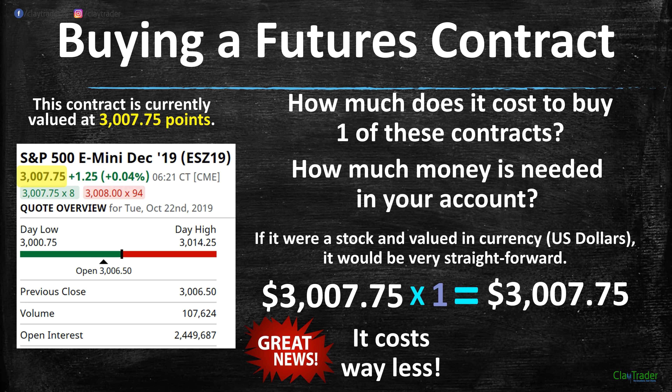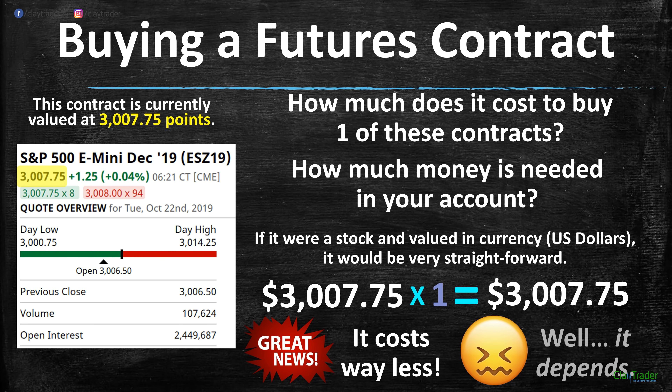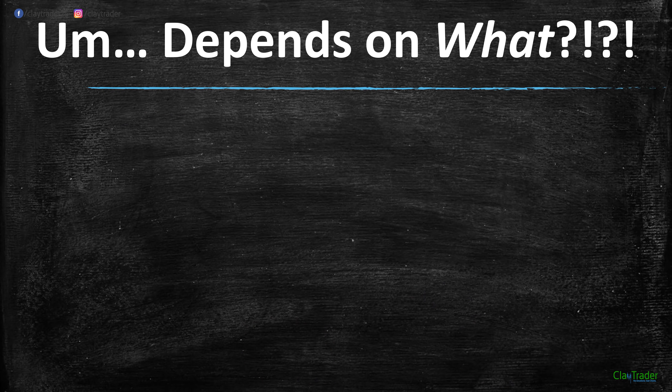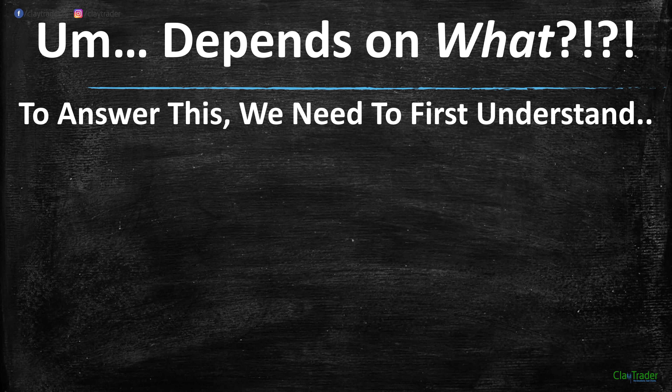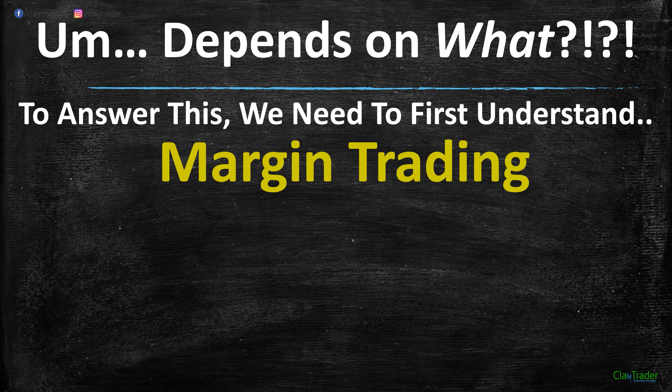But good old economics 101 trade-off — there's always a trade-off. The bad news is it depends. It depends on what? To answer this, we need to first understand a few more things, and the big first hurdle we need to get over and firmly understand is margin trading.